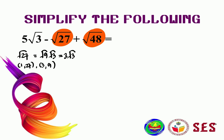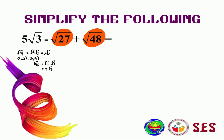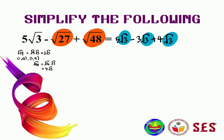The next one to simplify is square root of 48. We can simplify square root of 48 to be square root of 16 multiplied by square root of 3, giving 4 square root of 3. Now that we have simplified, we can rewrite the equation as 5 square root of 3 minus 3 square root of 3 plus 4 square root of 3. Because we have the same sets, we do the operation as usual: 5 minus 3 plus 4 gives us 6 square root of 3.